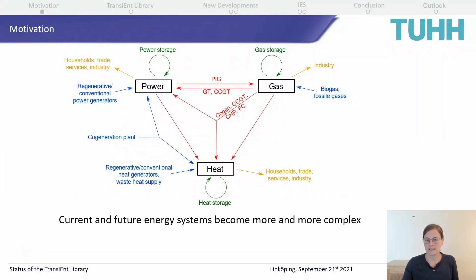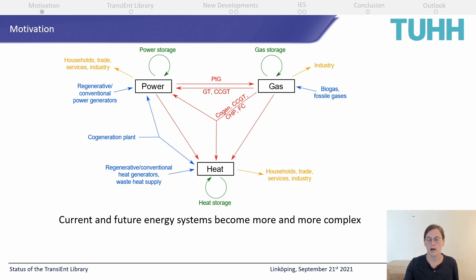Let's start with a small motivation. As you can see here, there are different sectors — power, gas, and heat — coupled within an integrated energy system by, for example, power-to-gas plants, gas turbines, or simple gas boilers. Current and future energy systems are becoming more and more complex due to certain mega trends that are the same all over the world: urbanization, decarbonization, and digitalization.